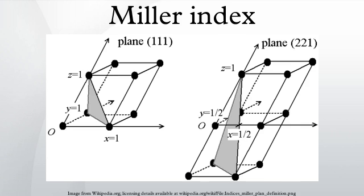Miller indices form a notation system in crystallography for planes in crystal lattices. In particular, a family of lattice planes is determined by three integers h, k, and l, the Miller indices.